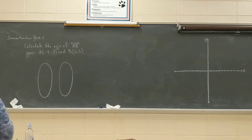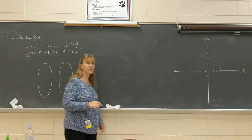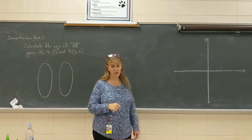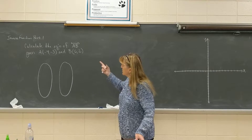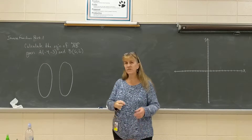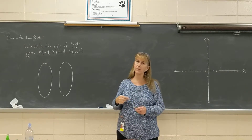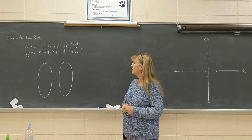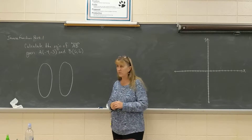We're going to play around with some inverse functions, and we're going to start with a quick review of writing the equation of a linear function. I would like to calculate the equation of line AB, given the fact that the point A is negative 4, negative 3, and the point B is 6, 2.